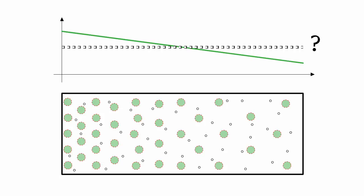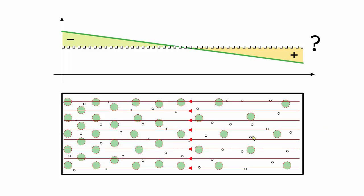On the left side, the immobile, negatively charged boron atoms outnumber the positively charged holes, so the material has a net negative charge. On the right side, the opposite is true. The charged areas produce an electric field that pushes the holes toward the left. Flow caused by an electric field is called drift.